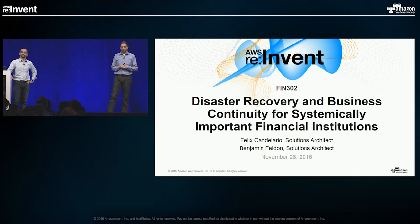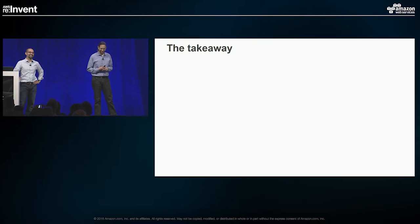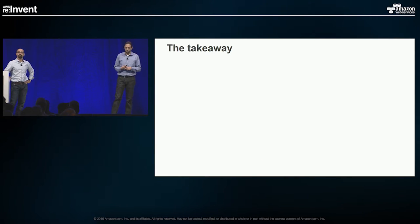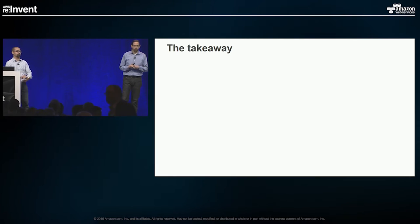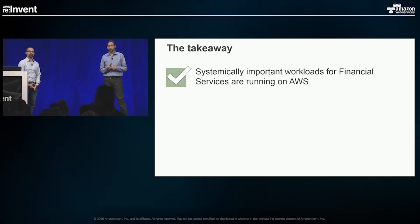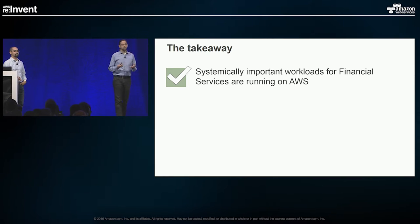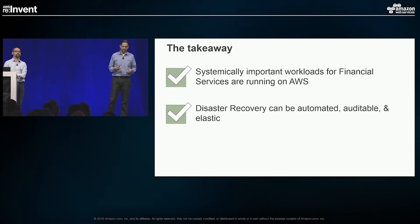This is where we would ordinarily be making a joke about you looking at the title of the session and then making for the exits frantically, but we couldn't find a funny one so we're going to skip it. We'd like you to know that systemically important workloads are running on AWS today. Disaster recovery can be automated, auditable, and elastic, and we will talk a lot about the benefits of pursuing such an approach.